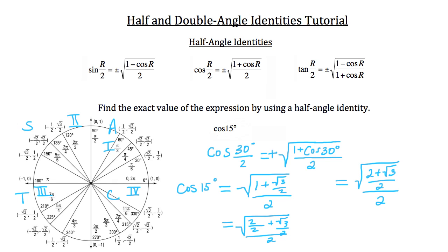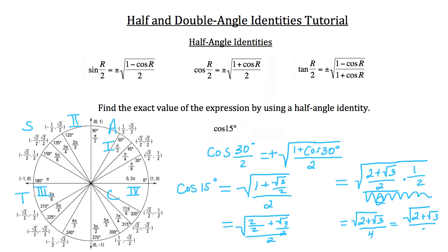To get rid of that over 2 in the denominator, I'll multiply by the reciprocal, 1/2. So 2 plus root 3 times 1 is still 2 plus root 3, and 2 times 2 is 4. This gives us the square root of (2 plus root 3) over 4, which can be written as the square root of (2 plus root 3) over the square root of 4. Since the square root of 4 is 2, this becomes the square root of (2 plus root 3) all over 2.